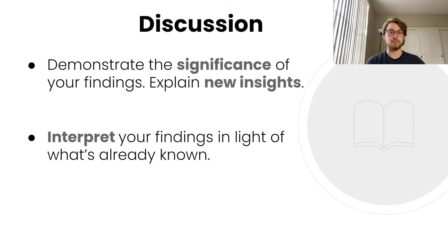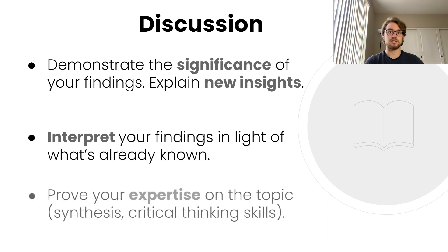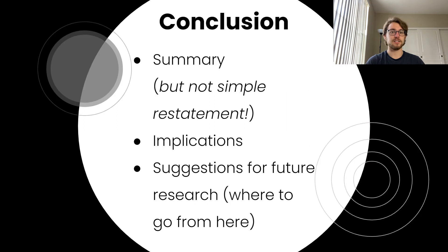Discussing the limitations of research should not be viewed as a weakness. Rather, it shows that the author understands the nuance between the research they have performed and what could be done in a subsequent study. Further, the discussion should illustrate the significance of the research and what impact this has had on the field or the world at large. Results should be analyzed and interpreted for meaning, synthesizing information from prior research. Finally, the discussion should prove that the author is an authority on the subject at hand.